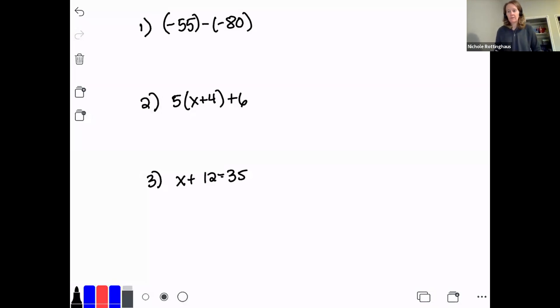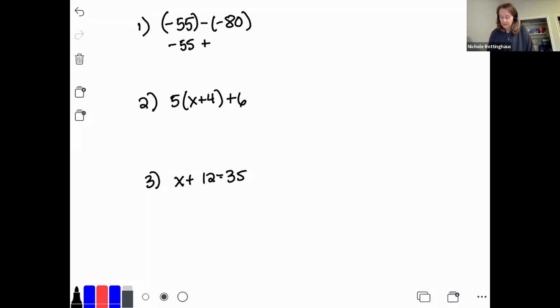Okay, so these are the three warmup problems I gave you. Number one is an integer subtraction problem. And remember the first step when we solve an integer subtraction problem is to turn it into an addition problem. So this becomes negative 55 plus a positive 80. So instead of subtracting a negative 80, we add the opposite. So we add a positive 80. And now I'm going to solve this like an integer addition problem.